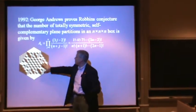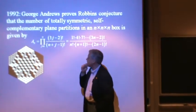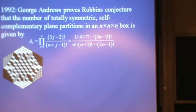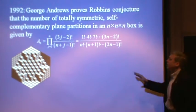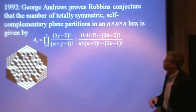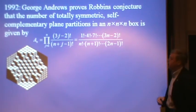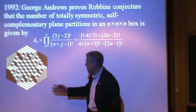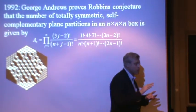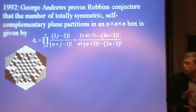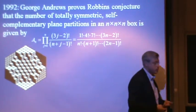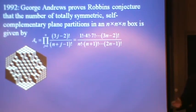The first real progress on these was made in 1992, when George Andrews actually proved a related conjecture that this rational product of factorials could be used to count the number of totally symmetric self-complementary plane partitions in an n-by-n-by-n box. If we think of these as cubes being piled into this box, what we want are arrangements of these cubes that are symmetric on all of the symmetries of the axes, so rotation of the axes or reflection.